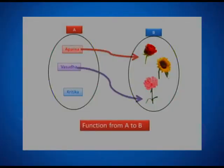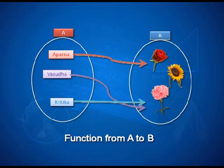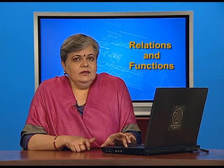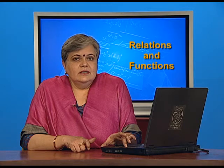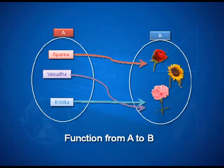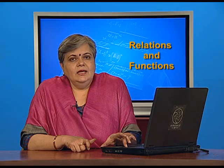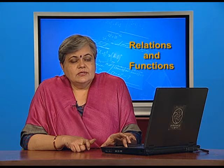So, Aparna likes rose, Varsudan likes carnation, Kritika also likes carnation - that is allowed. So, one and only one flower from the set B is related to the person. So, Aparna cannot like two flowers and such a relation is called a function. At the same time, an element of the set B, for example, the sunflower, is not associated with any element of the set A. So, sunflower is not the image of any element coming from set A, that is perfectly fine.